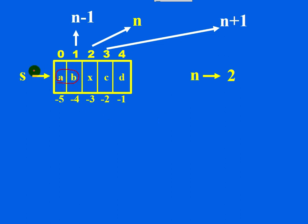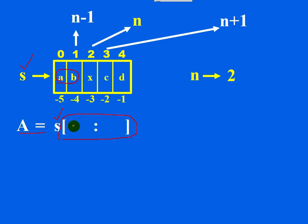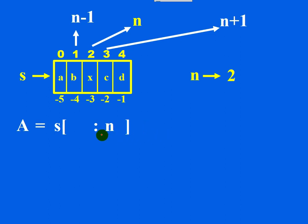To extract the first substring, use string slicing. Write: a = s[:n]. The start index is 0 by default, so don't write anything for it. The stop index should give you up to n minus 1, so you write n as the stop value — the slicing operator returns all characters starting from index 0 ending at n minus 1. So capital A now points to this first substring.